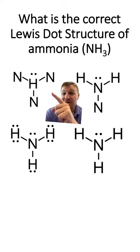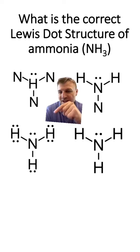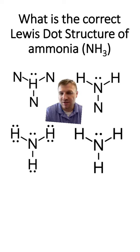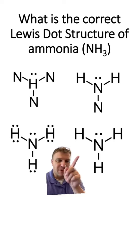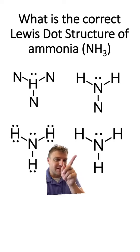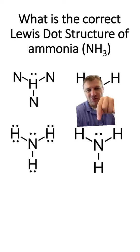We automatically know this one's not right because it's not the right elements. Remember that hydrogen only has one valence electron and nitrogen has five. This one's not going to be correct because there are too many electrons around each hydrogen. And this one's also not correct because we're missing a hydrogen that's replaced with a nitrogen. So the only one that is correct is this one right here — the central nitrogen surrounded by three hydrogens, and also a lone pair of non-bonding electrons.